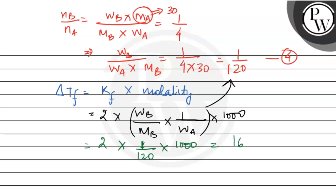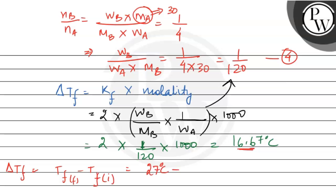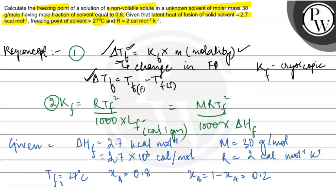ΔTf calculate hoga: 2 × 1000/120 = 16.67 degree Celsius. Ab ΔTf = T_f_initial − T_f_final (freezing point depression matlab initial se final ghata hai). T_f_initial = 27°C aur change = 16.67°C, toh T_f_final = 27 − 16.67 = 10.33 degree Celsius. Yeh hai aapka final answer: T_f = 10.33°C. Hope you understood it well, thank you.